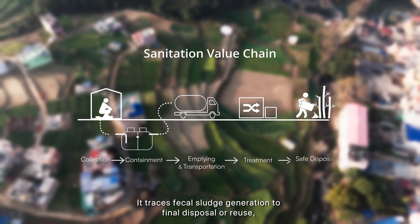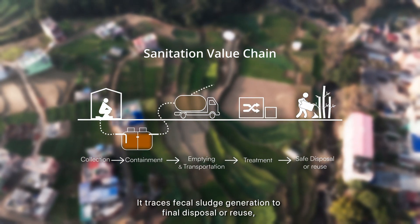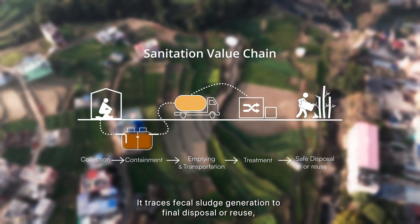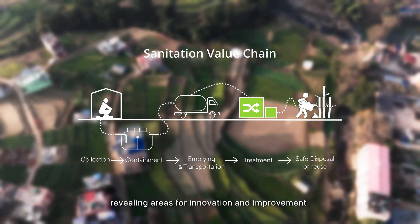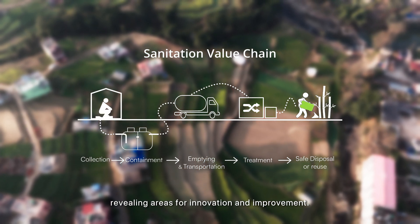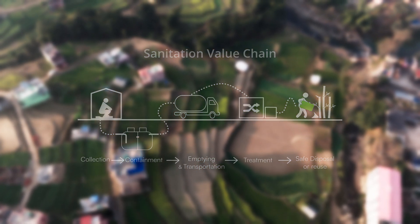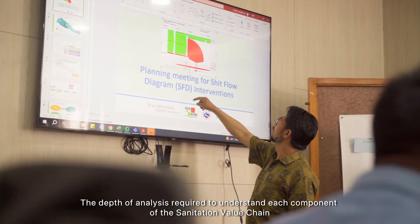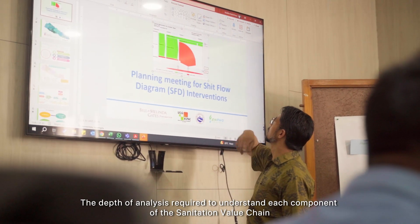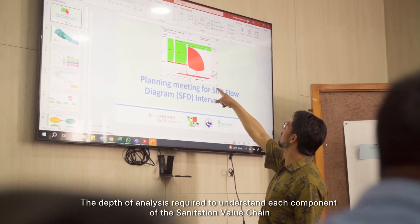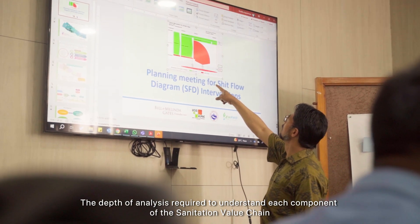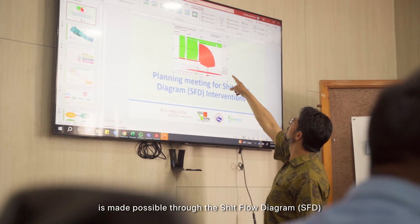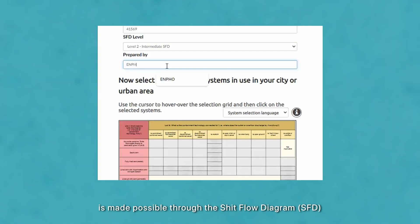It traces fecal sludge generation to final disposal or reuse, revealing areas for innovation and improvement. The depth of analysis required to understand each component of the sanitation value chain is made possible through the Shitflow Diagram.